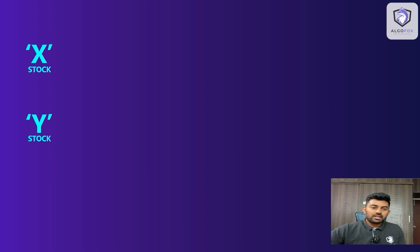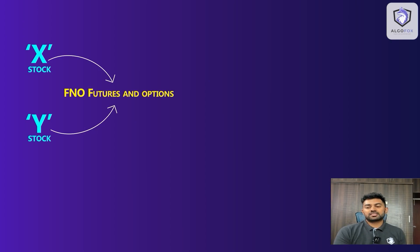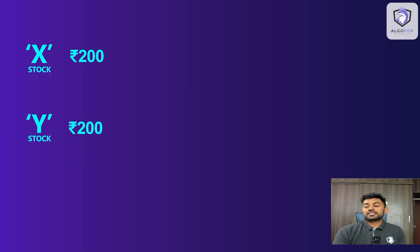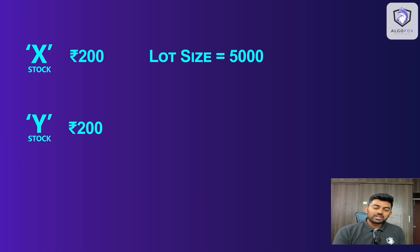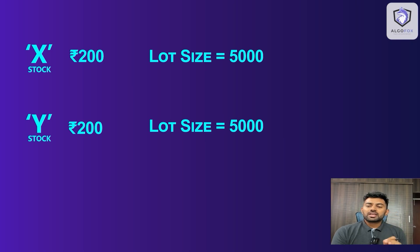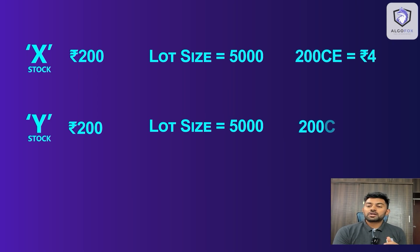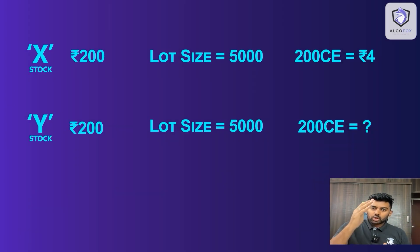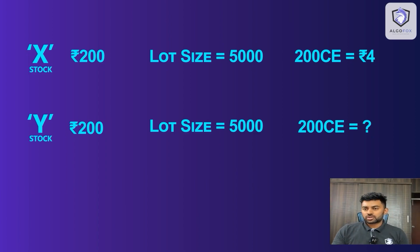Let us say there are two stocks X and Y, both listed in the F&O segment — that is, both having futures and options contracts. The price of stock X is 200 rupees and the price of stock Y is also 200 rupees. The lot size of X is 5000 and the lot size of Y is also 5000. Now if I ask you a very basic question: the 200 call of stock X is at 4 rupees — what is the value of the 200 call of stock Y? Looking at the scenario, you would assume that since the price and lot size of X and Y are both the same, the value of 200 call for both stocks should be the same.